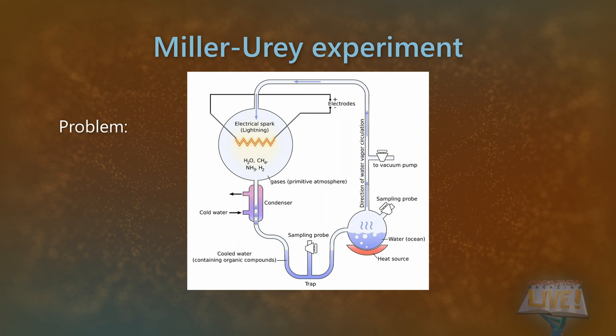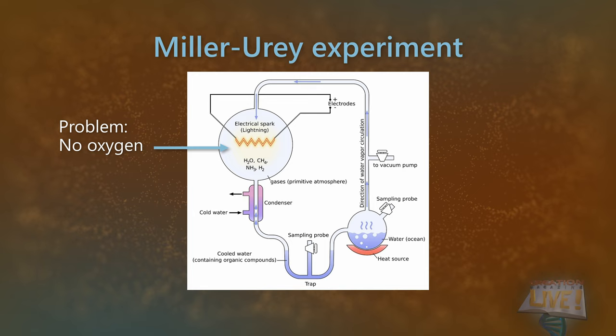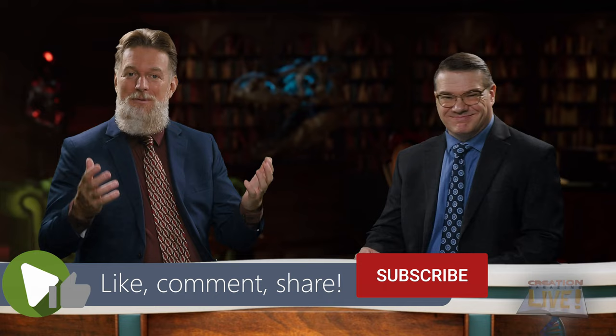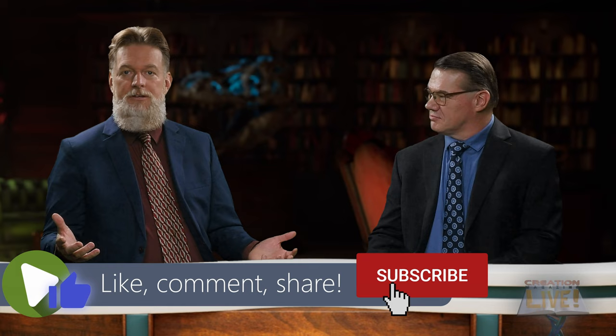Here are some of the problems with that experiment. First, there were starting assumptions about what gases would have been present on the primordial Earth, and these didn't include oxygen, which tends to destroy chemical bonds, preventing anything from forming. Since then, evidence indicates that oxygen likely was present at the time. So because it didn't accurately simulate the Earth's atmosphere, it's pretty much irrelevant as an experiment, and those amino acids could not have formed.